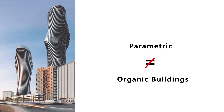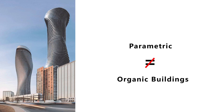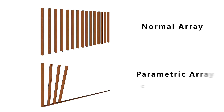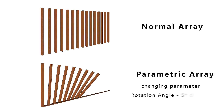Parametric design is not only about organic buildings. For example, take a wood piece — normally copy it like this. But this is a parametric process: the rotation angle is gradually increased by 5 degrees each time, and one pattern emerges. This is parametric design.